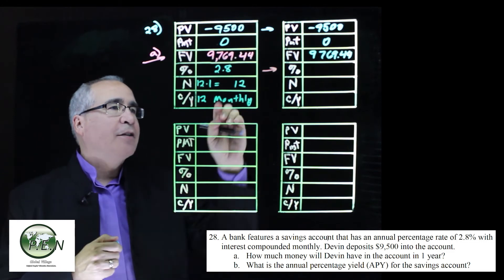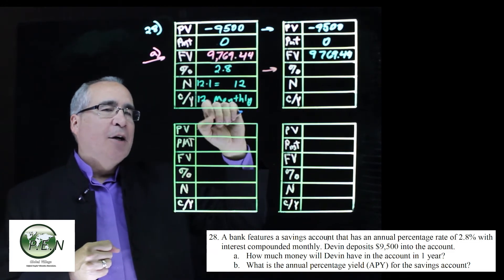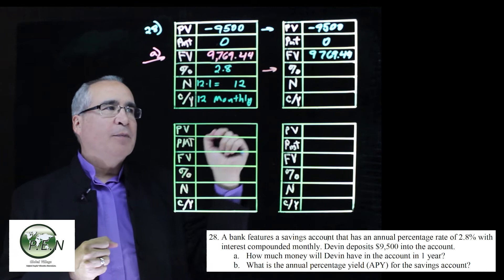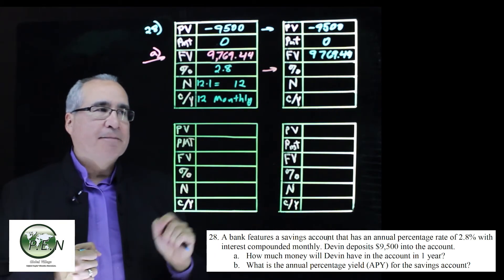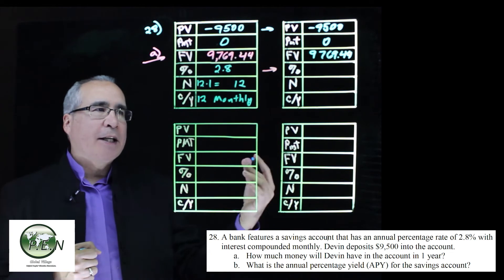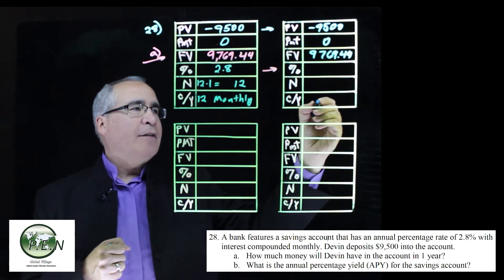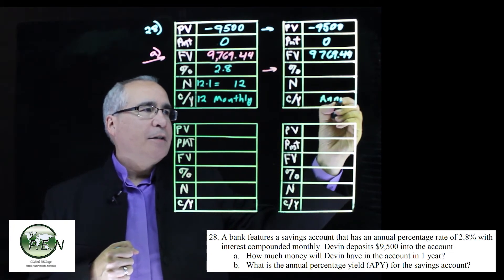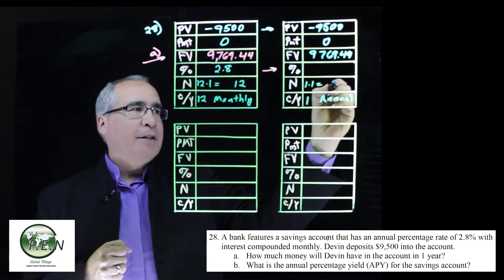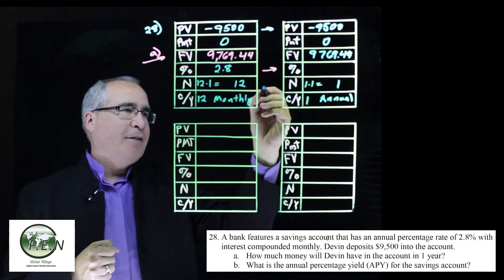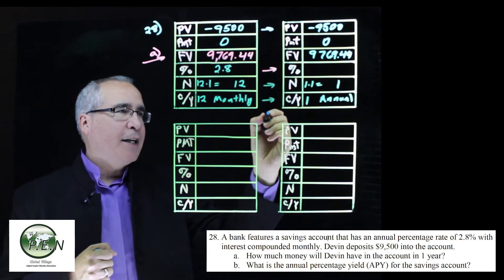What we need to change is instead of doing it monthly, we want to find out what's the effect, what would the interest rate need to be if we only compounded once a year. That's basically what APY is. So we change down here to annual, which is just once a year. So then we've got one times one, one period. So these are the major changes we need to have done.